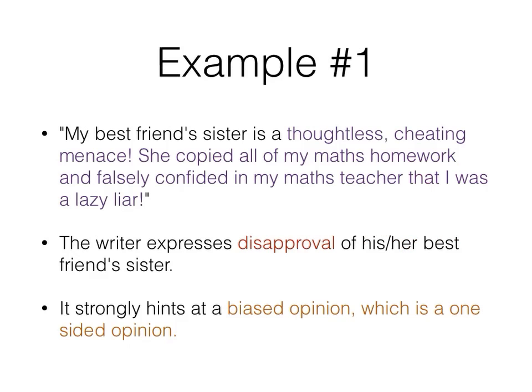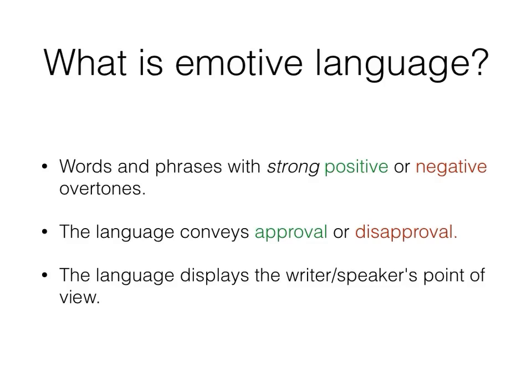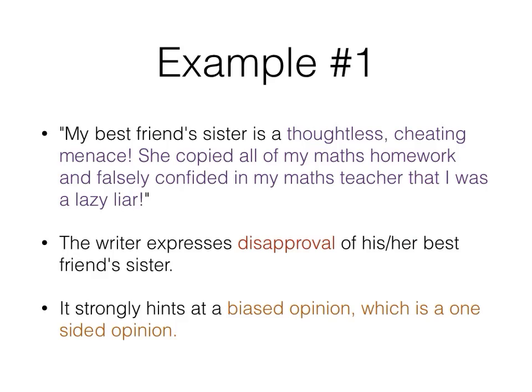Let's examine this first example: 'My best friend's sister is a thoughtless, cheating menace. She copied all of my maths homework and falsely confided in my maths teacher that I was a lazy liar.' The writer expresses disapproval of his or her best friend's sister, and we can see this through the use of the words thoughtless, cheating, and menace. It also strongly hints at a biased opinion, which is a one-sided opinion.